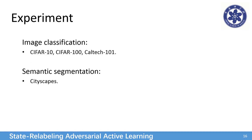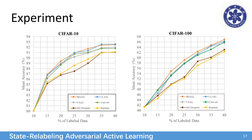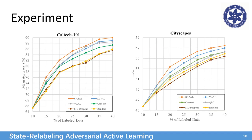We evaluate the performance on image classification and semantic segmentation tasks. For classification, we test on CIFAR and Caltech-101 datasets. For segmentation, we test on the CityScapes dataset. The results show that on these tasks our model achieves better performance.